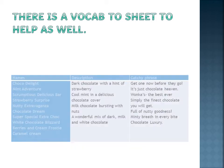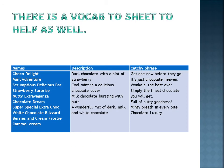Now, if you get stuck and you're stuck for ideas, there is a vocab sheet to help you as well. I've got some names, some descriptions, and a catchy phrase or two that you can magpie. So for names, for example, we have Chocolate Delight, Scrumptious Delicious Bar, the Now the Extravaganza, Chocolate Cream, and right at the bottom, Caramel Cream.